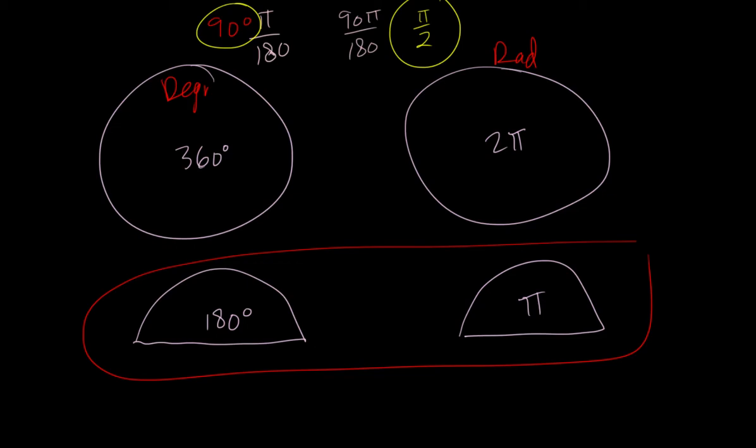Now, if we want to go the other way, let's say we're given π thirds radians. Well, we're going to use this same thing, but we're going to flip it upside down, because our goal is to cancel the π, because when we're in degrees, we don't want π in our answer.